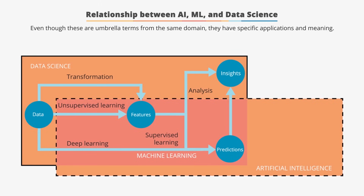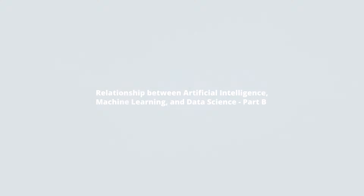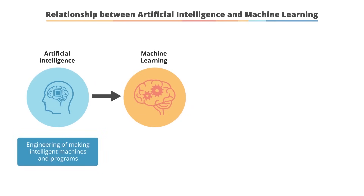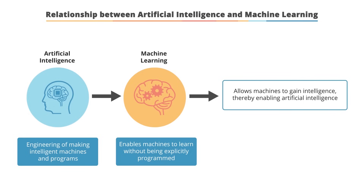When you are done with data analysis, you want your data to perform some actions — this is where AI comes into the picture. Artificial intelligence combines predictions and insights to perform actions based on human and automated decisions. Artificial intelligence is the engineering of making intelligent machines and programs, while machine learning provides systems the ability to learn from past experiences without being explicitly programmed, enabling artificial intelligence.